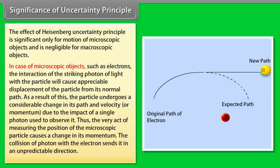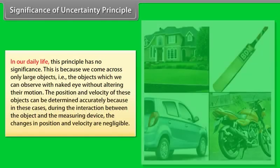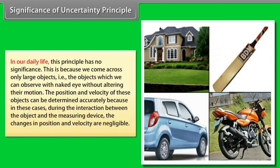The collision of a photon with the electron sends it in an unpredictable direction. In our daily life, this principle has no significance, because we come across only large objects — objects which we can observe with the naked eye without altering their motion. The position and velocity of these objects can be determined accurately because, during the interaction between the object and the measuring device, the change in position and velocity are negligible.